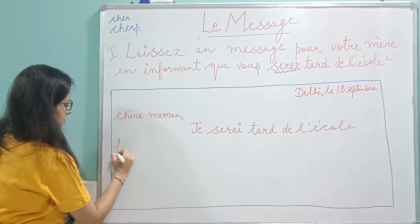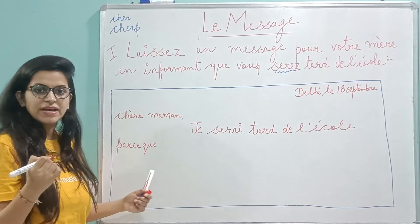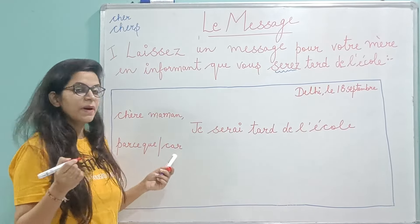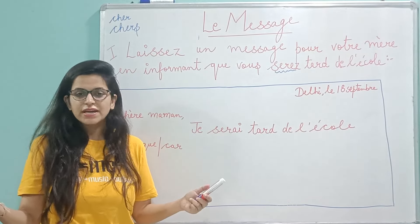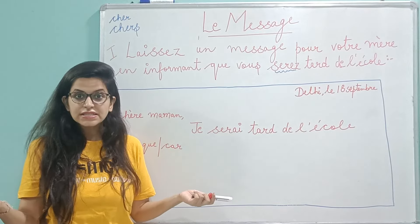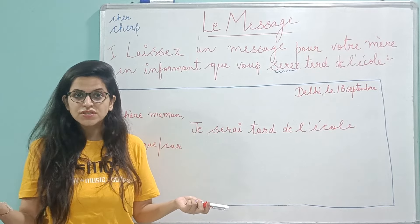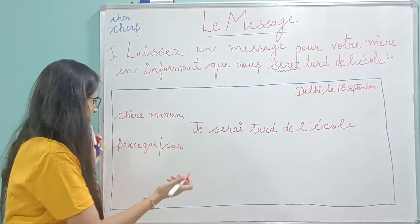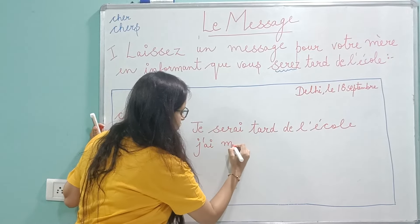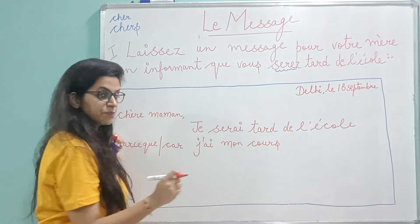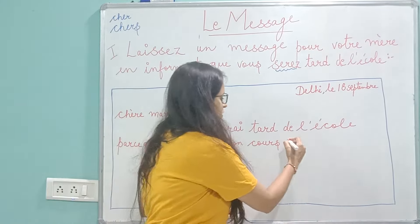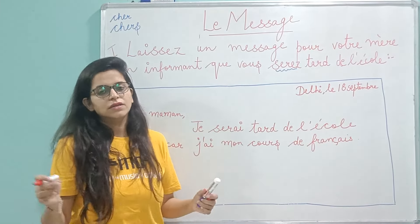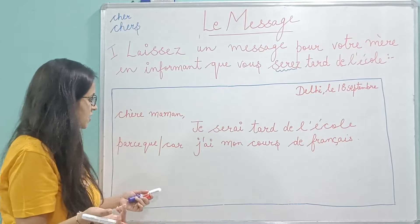Now you need to give a reason. You can use 'parce que' or 'car' — both mean 'because'. So: 'Je serai en retard de l'école parce que...' and then write your reason. It can be any reason — because you have a French class, a dance class, or you're going to a friend's house after school. Right now let's assume we have an extra class. So we write 'je m'occupe de français' — 'kur' is an exception ending with S but singular. You can write any subject: dance, music, any subject.